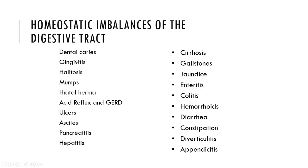We then have gingivitis, which is an "-itis" condition — meaning inflammation. Gingiva refers to our gums, so gingivitis is the inflammation of our gums, usually caused by a bacterial infection. Then we have halitosis, which is a fancy name for bad breath, and it's usually caused by bacteria as well.